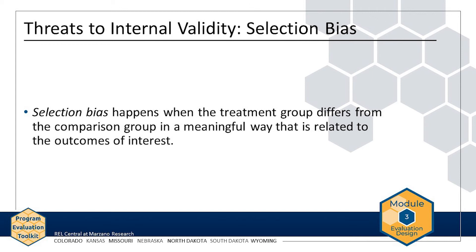Meaningful differences between the treatment and comparison schools are likely. For instance, the schools that participate may be more likely to have staff that support program implementation. Or they may serve student populations that receive more family support to complete homework assignments. As a result, the treatment group may not be representative of the target population, possibly leading to overly positive results.